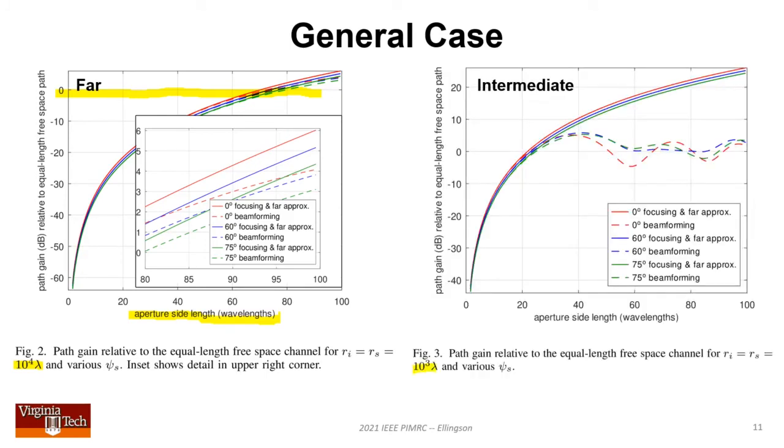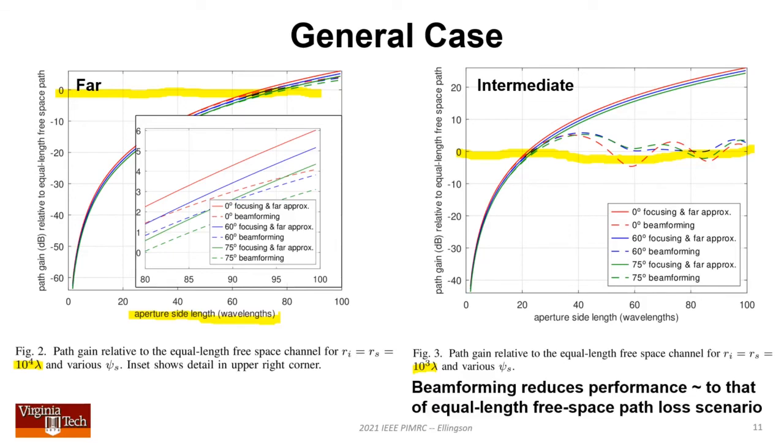If we reduce distance to 1,000 wavelengths, you start to see the penalty for beamforming. Here's the 0 dB line. Beamforming runs out of gas right about at 0 dB for aperture side lengths greater than about 20 wavelengths. If you're beamforming and not fully in far domain, there's an upper limit to how big a surface you can effectively use. Further increases in RIS size won't improve performance. This happens because when beamforming, the portion of surface contributing most effectively depends on effective focal length, not number of elements forming the beam. This contrasts with focusing, where more elements always improve performance.